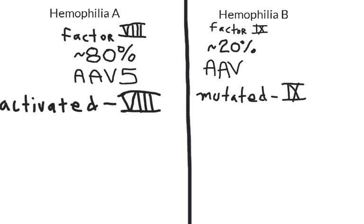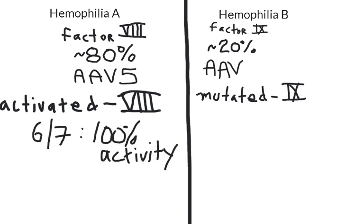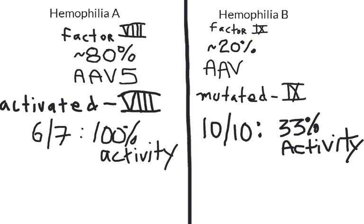For hemophilia A, researchers were able to generate 100% of factor VIII activity in six out of seven patients, while for hemophilia B, the researchers were able to generate 33% of factor IX function for 10 out of 10 patients.